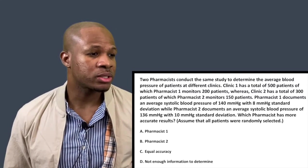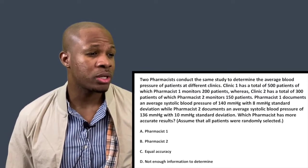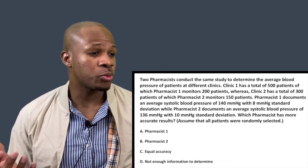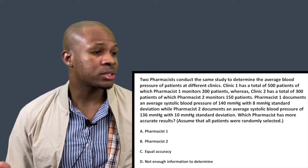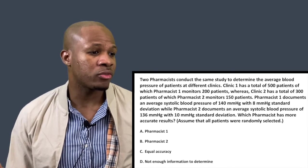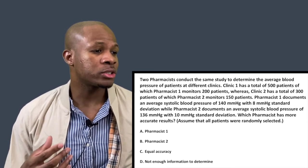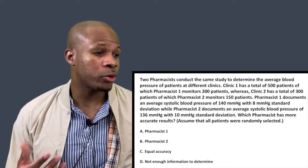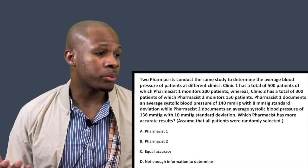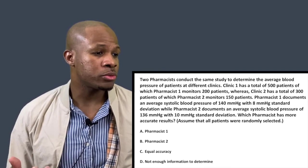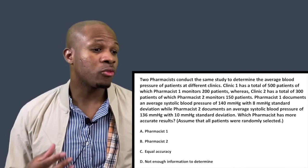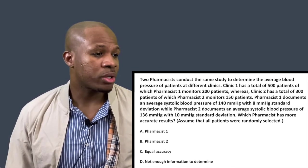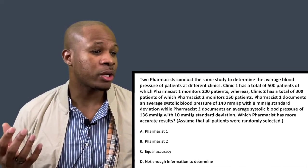Question number one: Two pharmacists conduct the same study to determine the average blood pressure of patients at different clinics. Clinic one has a total of 500 patients, of which pharmacist one monitors 200 patients. Clinic two has a total of 300 patients, of which pharmacist two monitors 150 patients. Pharmacist one documents an average systolic blood pressure of 140 mmHg with 8 mmHg standard deviation, while pharmacist two documents an average of 136 mmHg with 10 mmHg standard deviation.